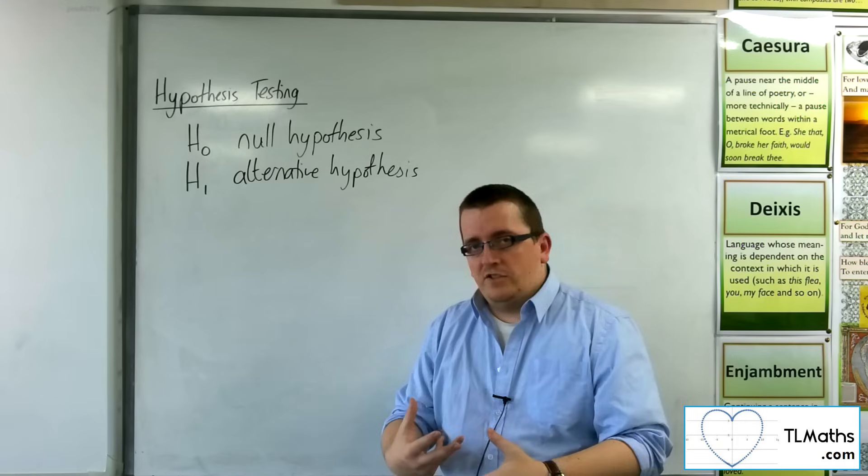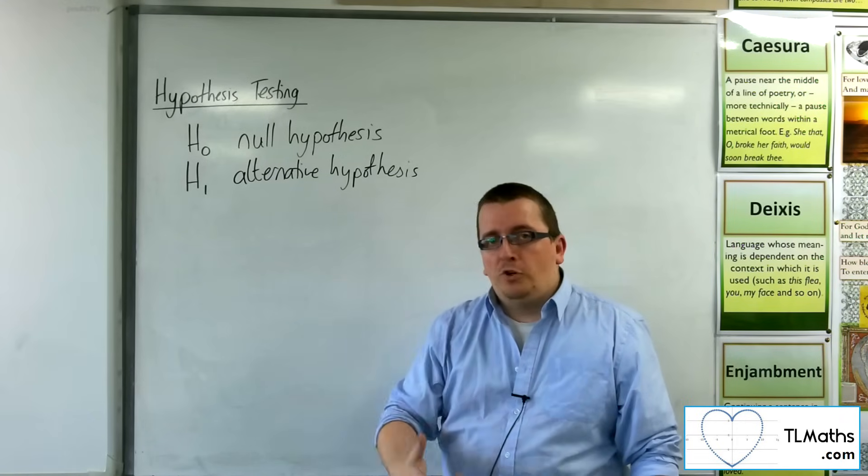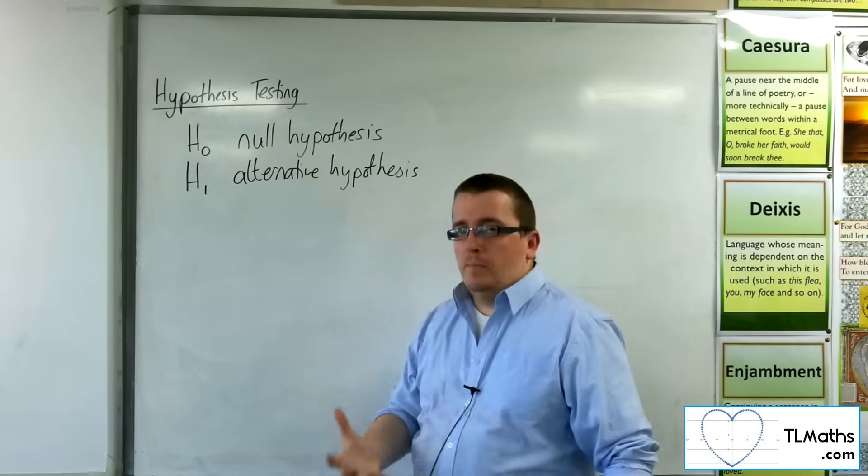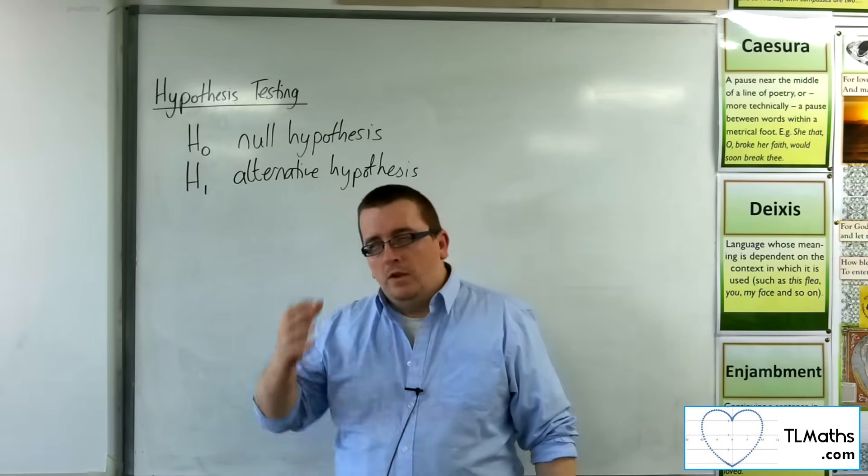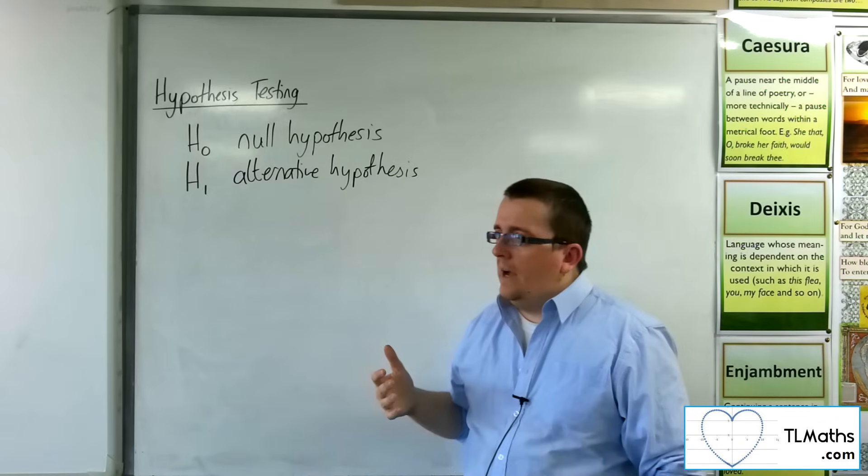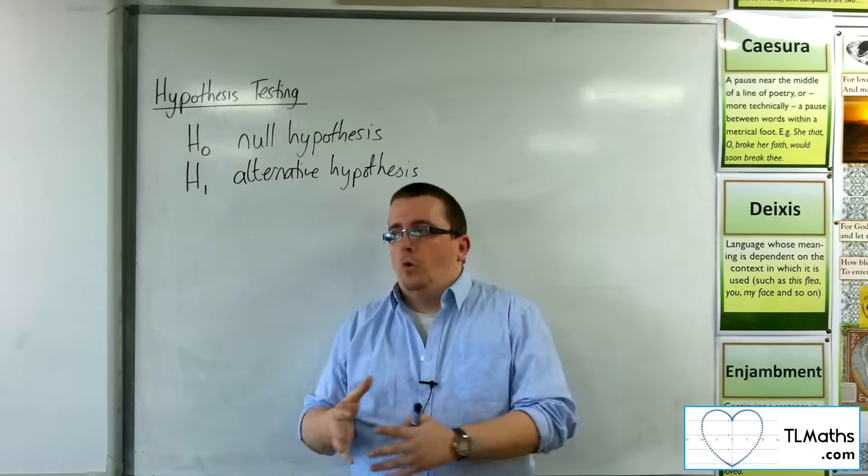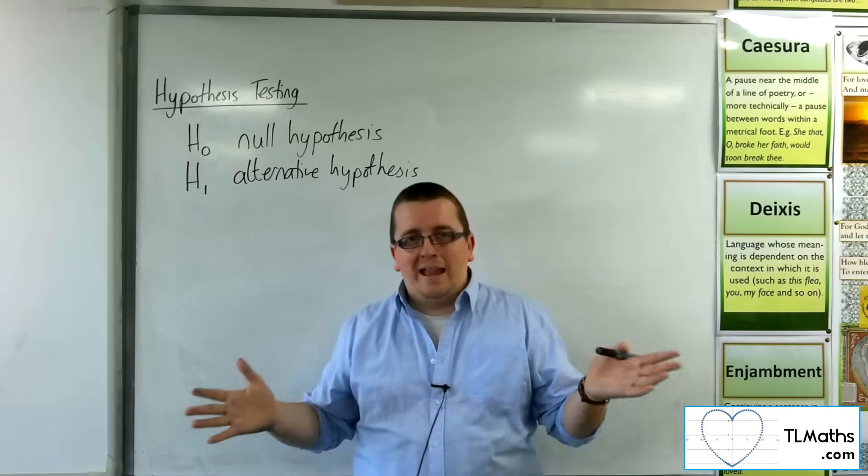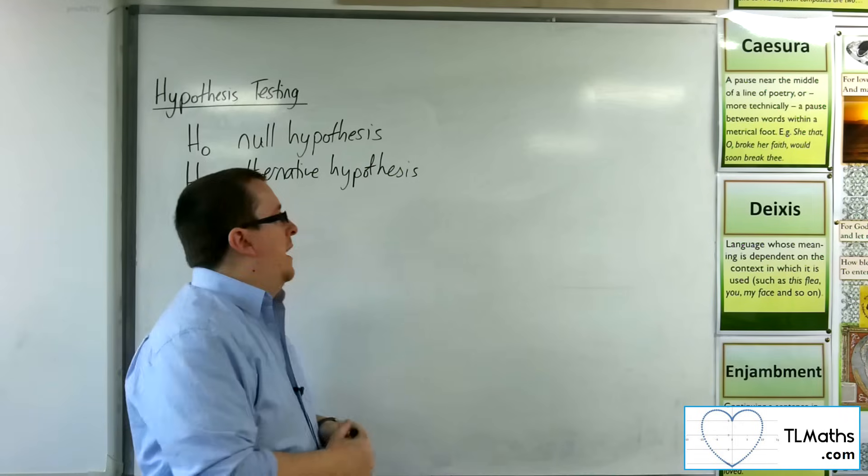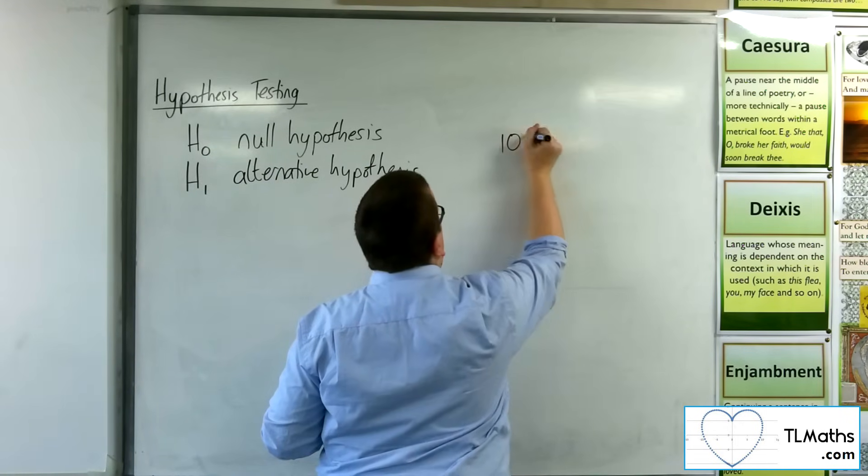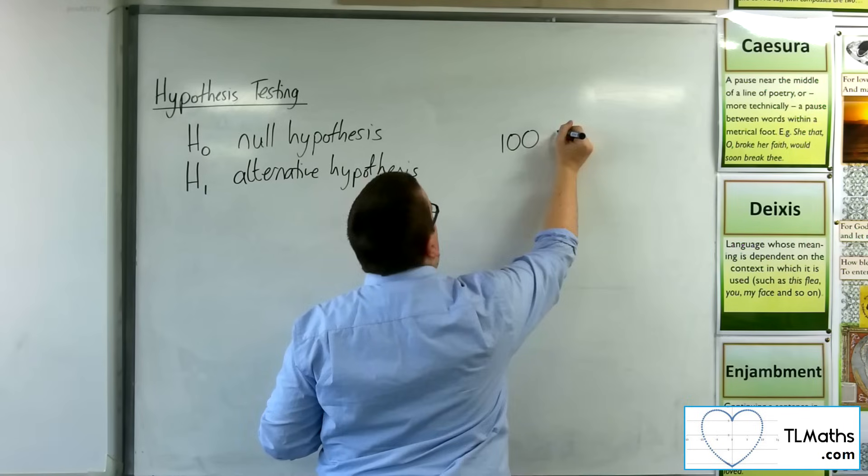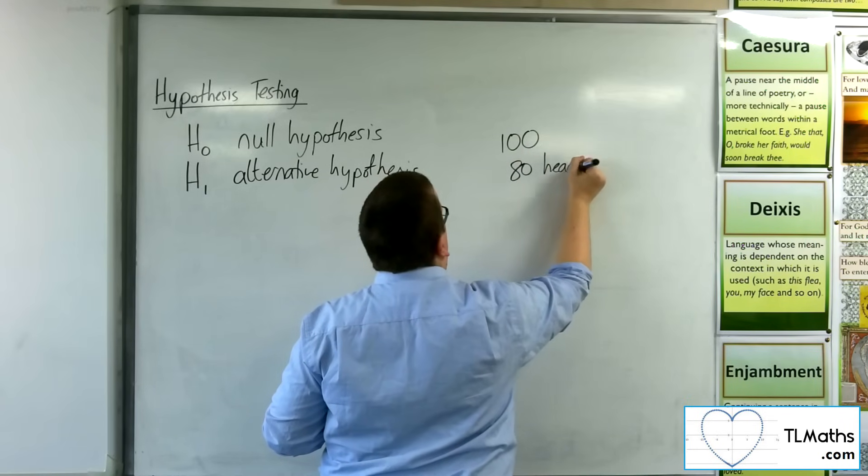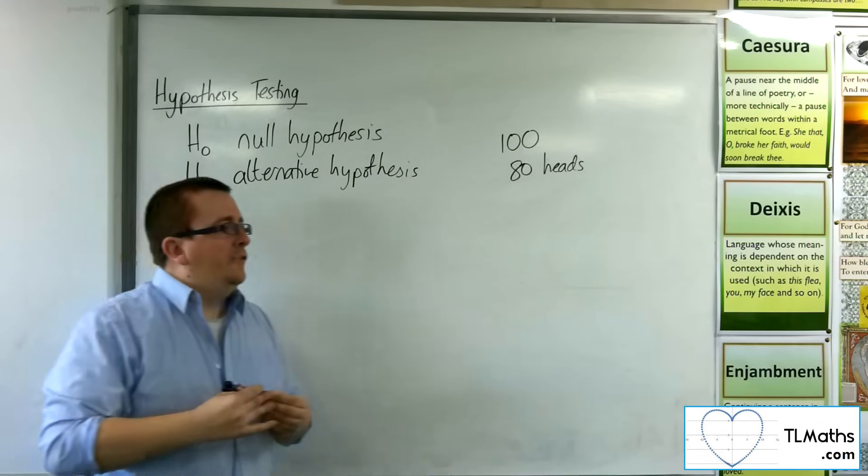So, what this is doing is it's all about building evidence. Building evidence for a case against the null hypothesis. So, let's say instead of all of those 100 heads coming out, all those 100 flips of the coin coming out heads, let's say you've done 100 flips of the coin and you've actually found that 80 are heads.